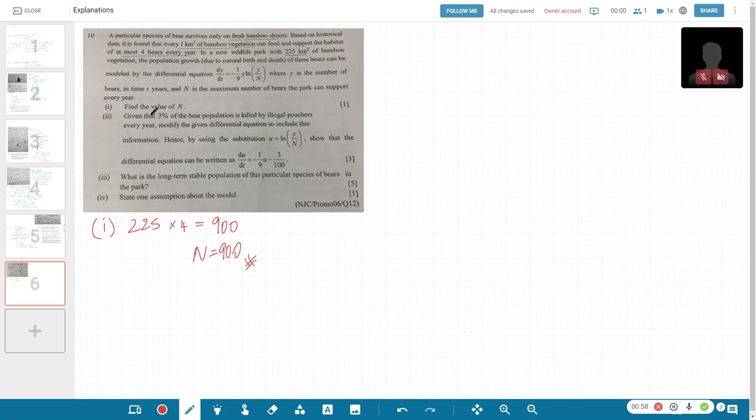Part 2, given that 3% is killed by illegal poachers, modify to include this information and use this substitution to show this. For Part 2, what happens is that for DE, it's always the rate of increase minus the rate of decrease. For this case, this particular one that's given to you, the population growth, this is the rate of net increase due to natural birth and death.